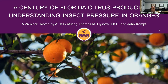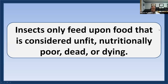I want to emphasize that I will be looking at oranges specifically within citrus, and focusing on the Florida orange industry — not California, Texas, or Arizona. The first slide is one I started with last time: insects only feed upon food that is considered unfit, nutritionally poor, dead, or dying — and there are no exceptions to this.